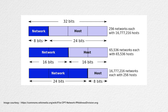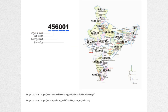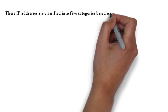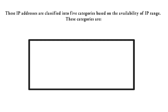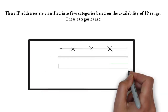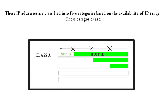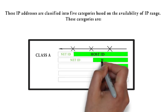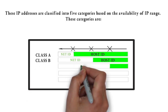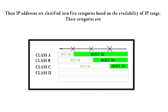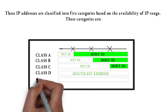This address uniquely identifies a device connected to the internet, similar to the postal system where we identify any house by first identifying the country, then the state, followed by the district, post office, cluster or block, and finally the house number. The system of IP address classes was developed for the purpose of internet IP address assignment. The classes were created based on network size. For example, class A was created for a small number of networks with a very large number of hosts, and class C was created for numerous networks with a small number of hosts. IP addresses are classified into 5 categories based on the IP range: class A, B, C, D, and E.